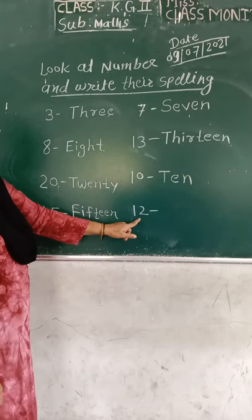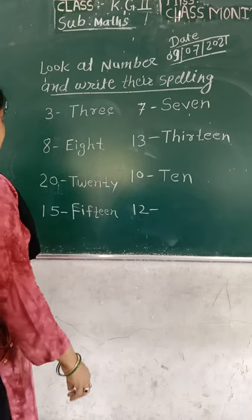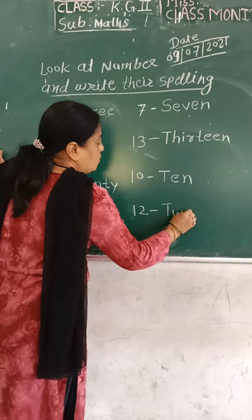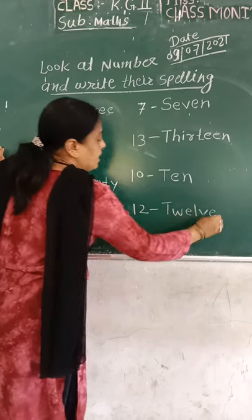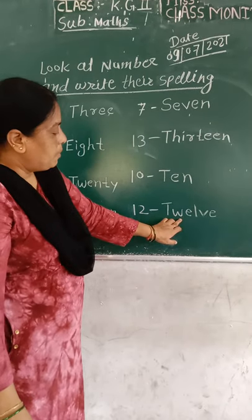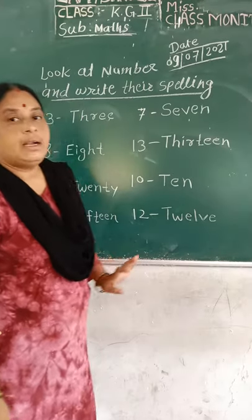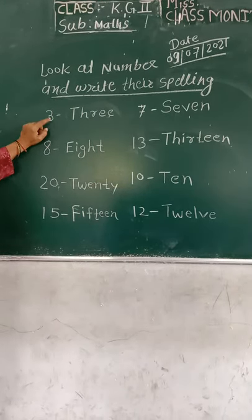What is the number? Twelve. Very good. The number is twelve. Twelve spelling: T-W-E-L-V-E. Twelve. T-W-E-L-V-E. Twelve. Okay, let's repeat.